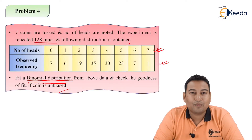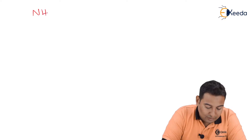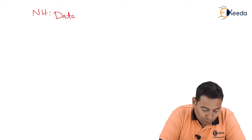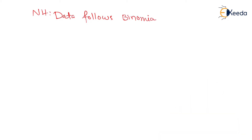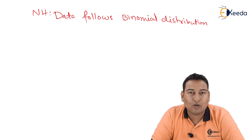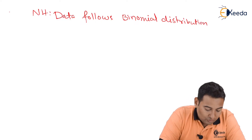First of all, let us start with the null hypothesis. Remember, whenever the problem is of fitting type — in this case we need to fit a binomial distribution — always assume the null hypothesis as: data follows binomial distribution. If it were a Poisson distribution, we would write data follows Poisson distribution, and so on.